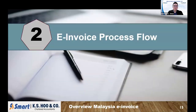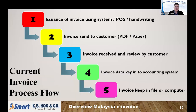After the first part on concepts, the second part we want to share is how the e-invoice process flow compares to the current invoice process flow. So this is the current invoice process flow — currently you might issue invoices using a system, from a POS system, or by handwriting. After you issue the invoice, you send it to your customer either as a PDF or paper.